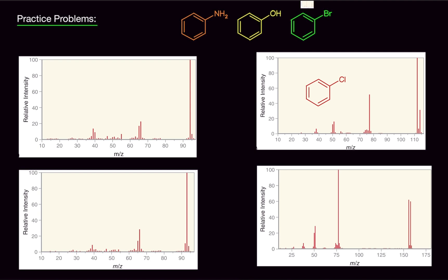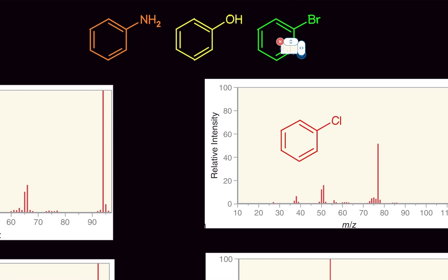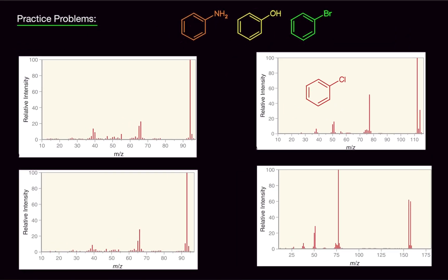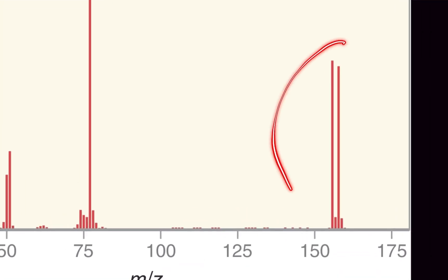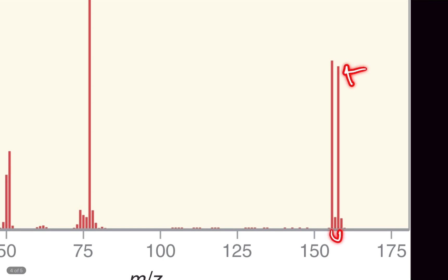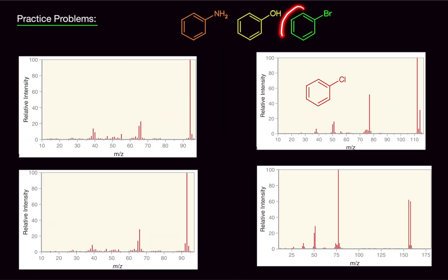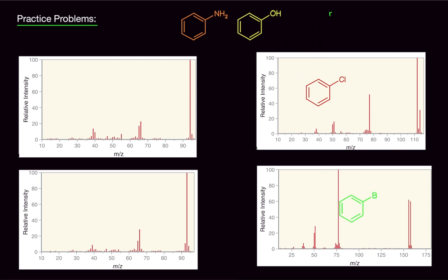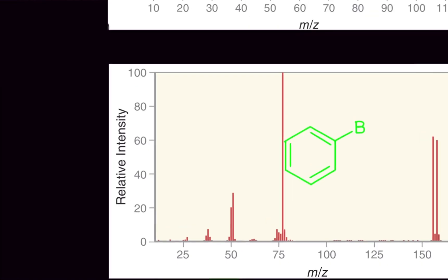For bromine: you can see the molecular ion — it's the tallest bar in the last grouping, but just barely. The M+2 peak is almost the same size as the molecular ion — close enough to equal — and that indicates bromine is present. So this spectrum belongs to the bromine compound.